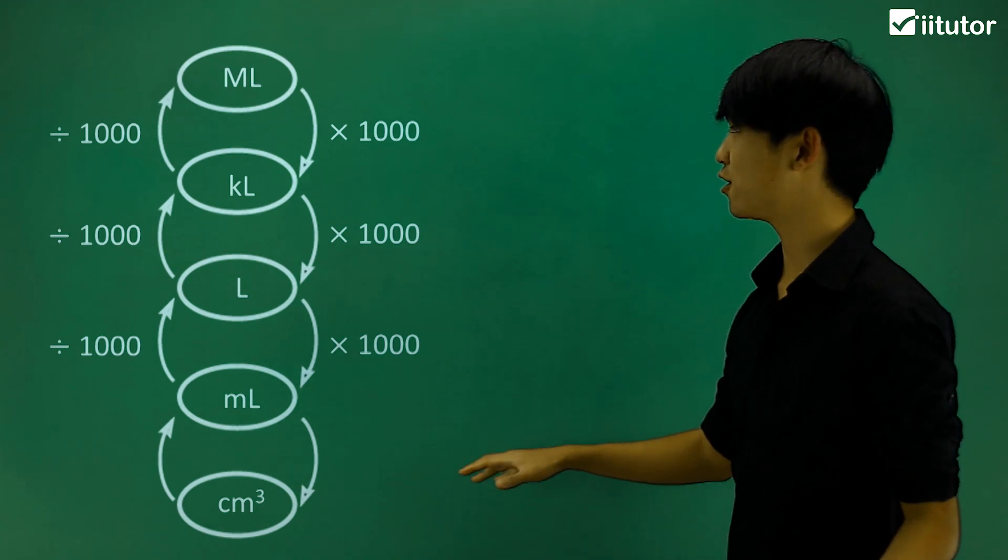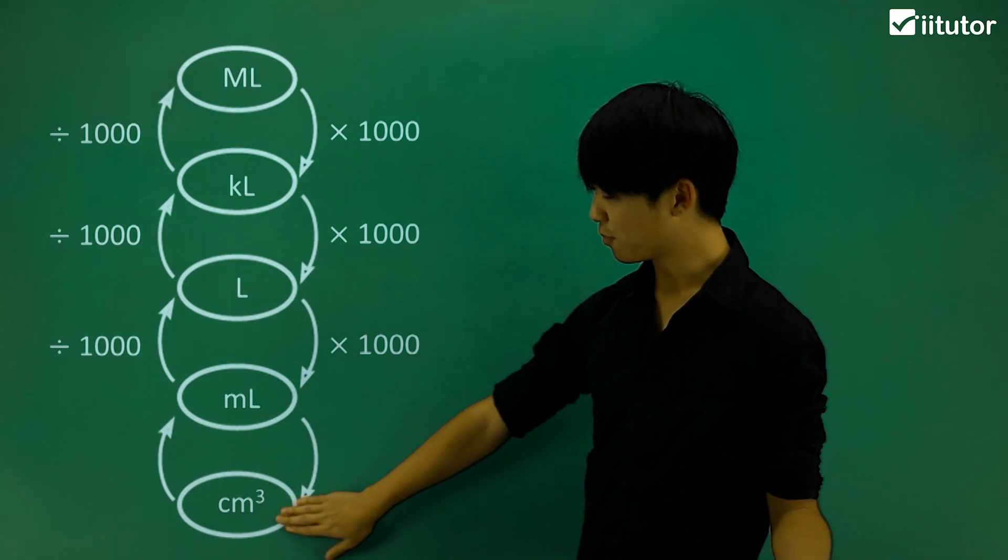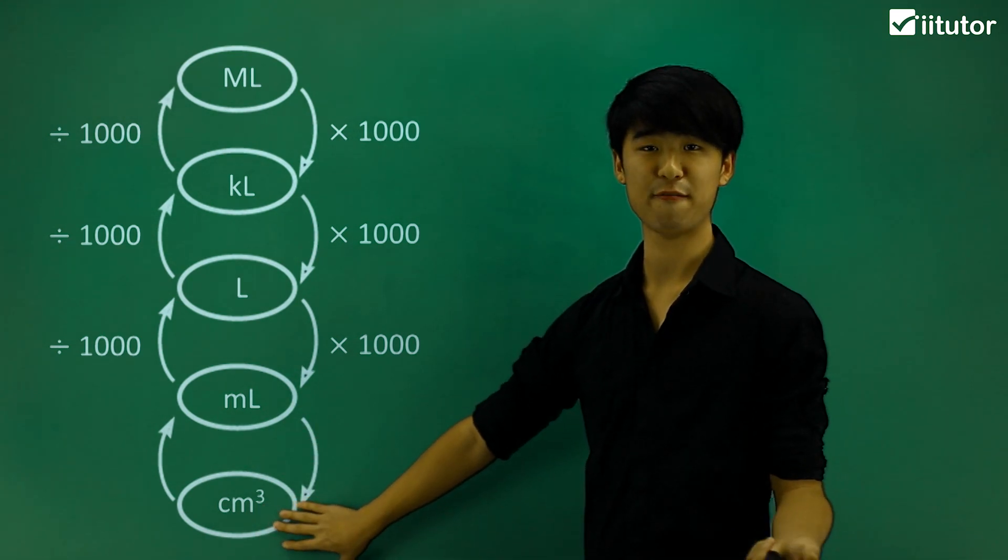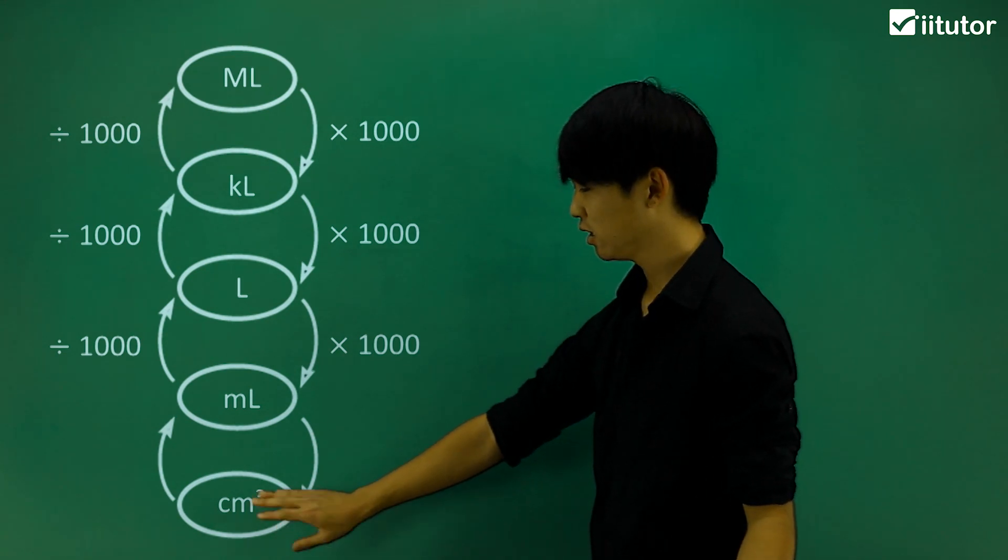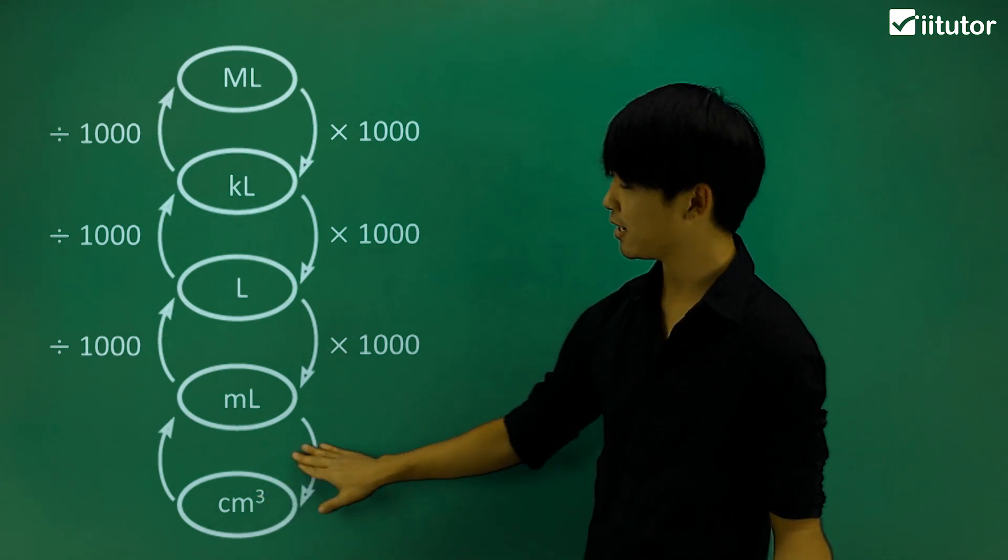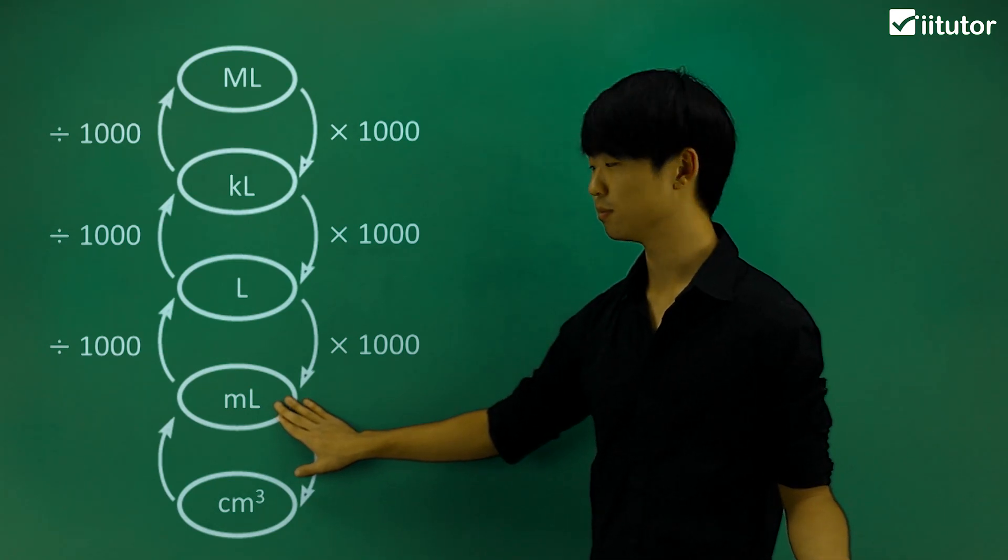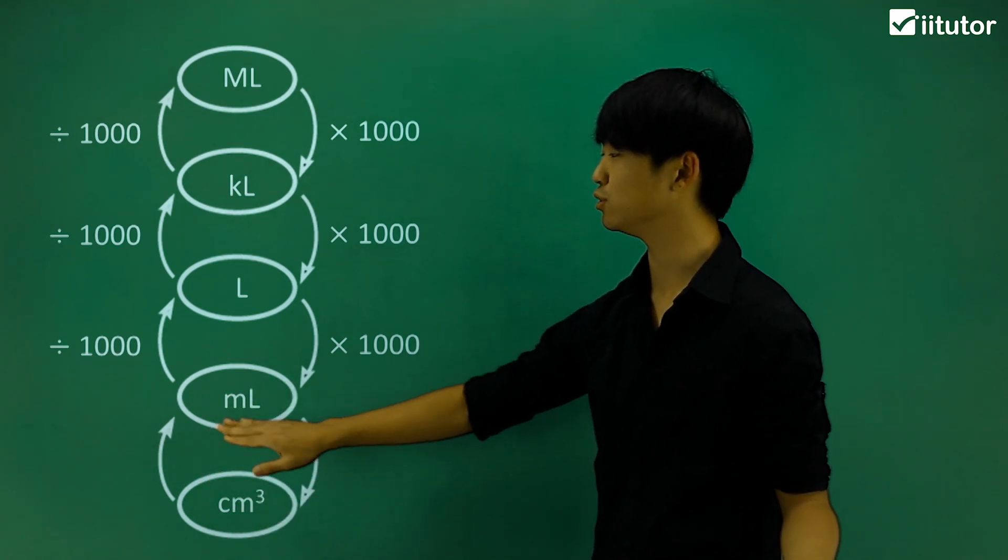So if we briefly go through this, at the very bottom we have centimeters cubed. So that's my volume portion of this conversion. Once I have it in centimeters cubed, I know that that will be exactly 1 milliliter as well. So these conversions are very simple down here.